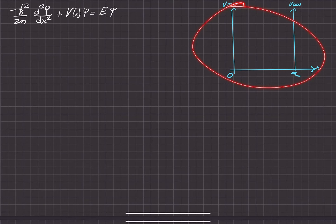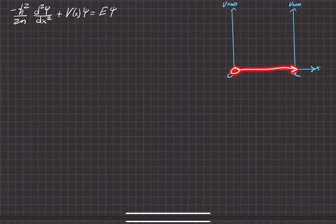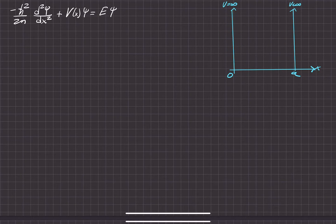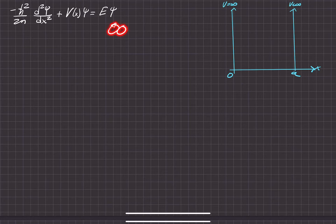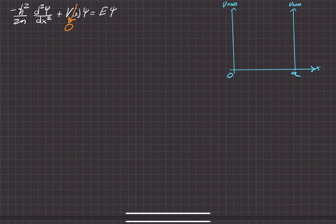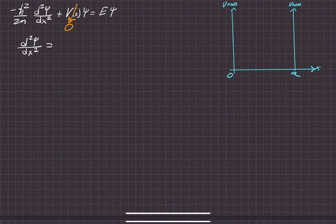For this problem, we have the infinite square well, where there's some well that extends from 0 to A, and it's bounded by two barriers, both going off to positive infinity for the potential. The wave function can't exist out here because if the potential is infinity, the energy would have to be infinity. The only place it can exist is where the potential equals 0. So if we have some potential that equals 0, we can then solve for the second derivative, making it a neater partial differential equation to solve. That ends up equaling negative 2mE over h-bar squared times our wave function, which is a function of x.